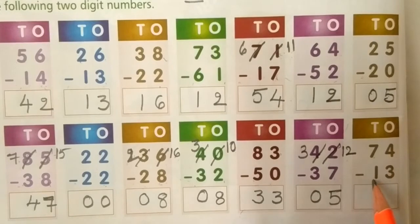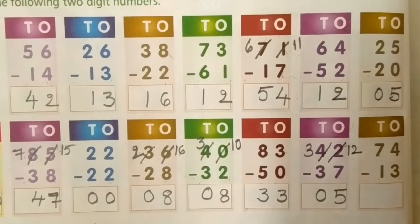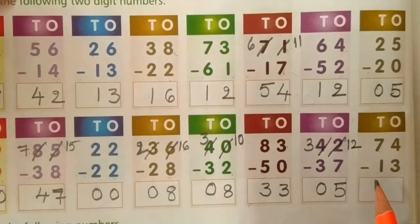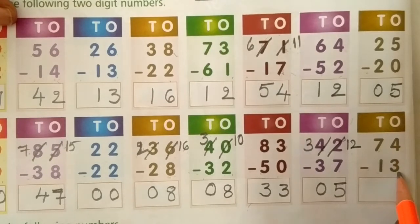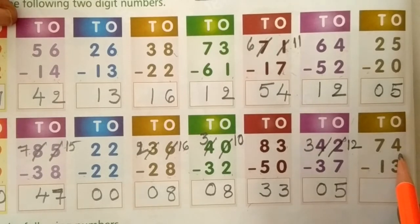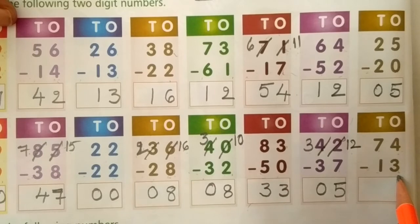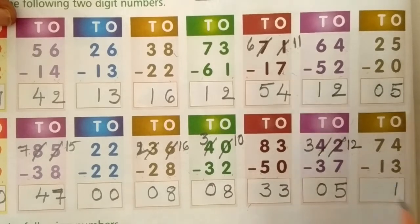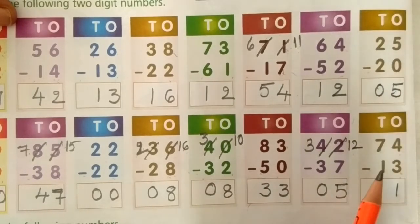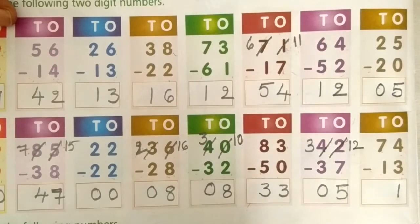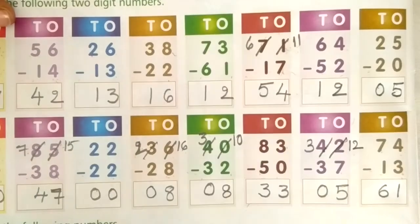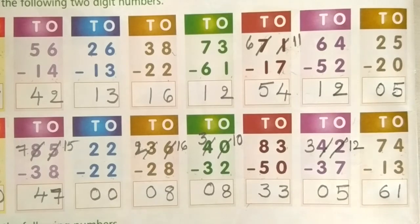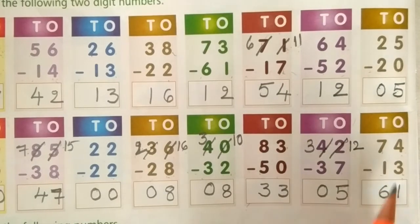Next: 74 minus 13. 4 minus 3: take 4 fingers, close 3 fingers — answer is 1. Then take 7 fingers, close 1 finger — answer is 6. So 74 minus 13 equals 61.